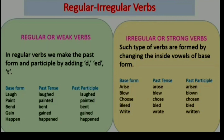Regular or weak verbs form their past tense and past participle by adding -d, -ed, or -t. Examples: laugh → laughed → laughed; paint → painted → painted; bend → bent → bent; happen → happened → happened. Irregular or strong verbs form their past tense and past participle by changing the inside vowel of the base form. Examples: arise → arose → arisen; choose → chose → chosen; bleed → bled → bled; ride → rode → ridden.